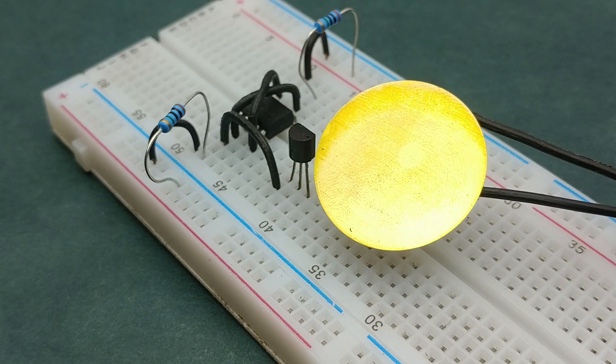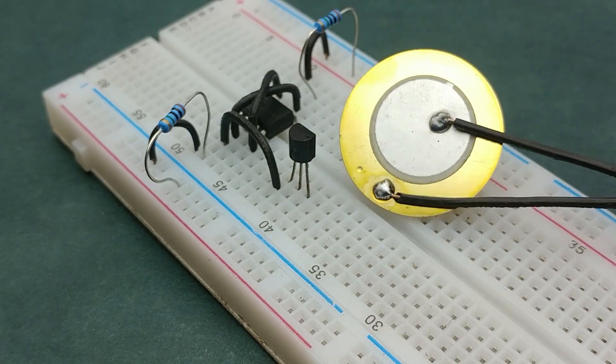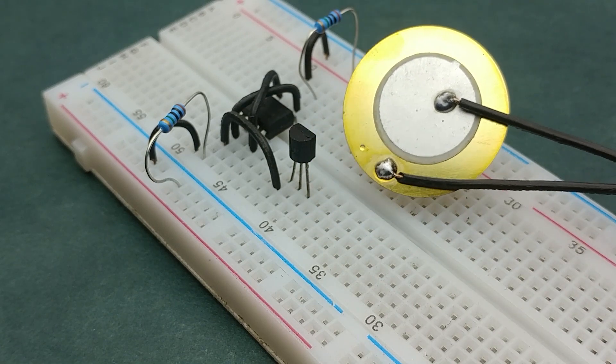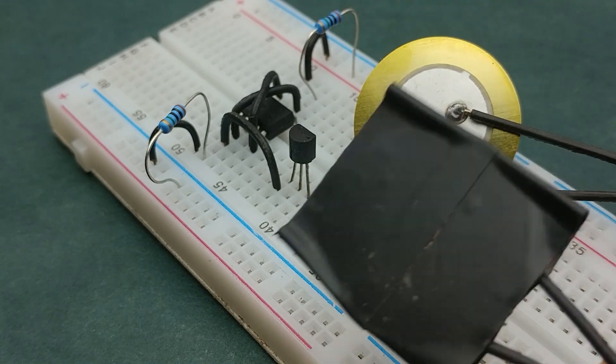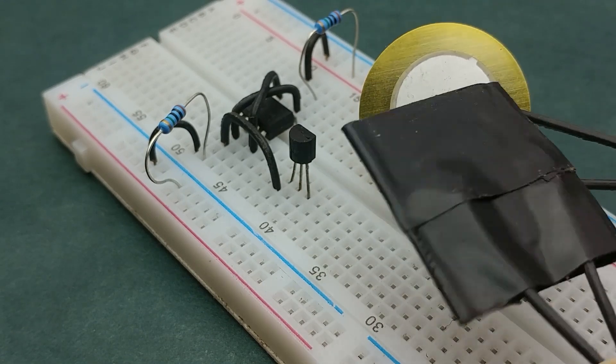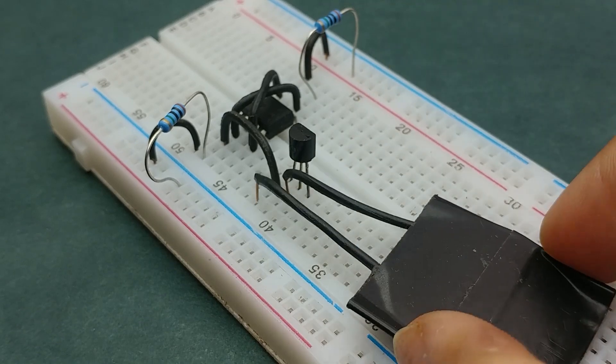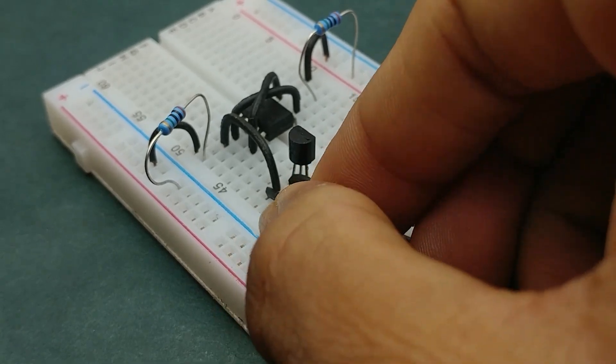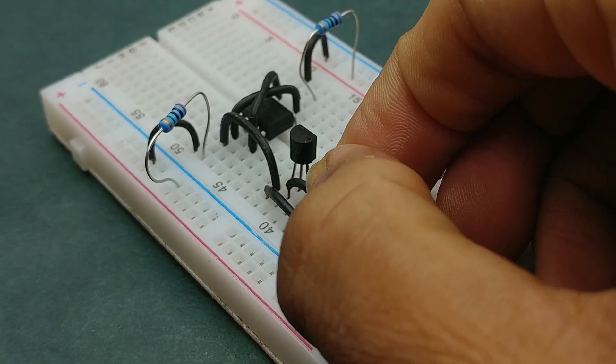Now take a Piezo speaker, solder a wire to both the film contacts, one at the center and the other at the outer ring. Then cover the entire surface with a non-conductive material. Connect one of its terminals to the emitter pin of transistor and the other terminal to the base of transistor.